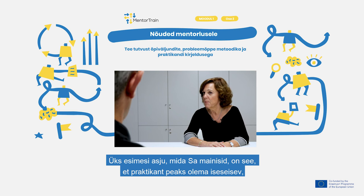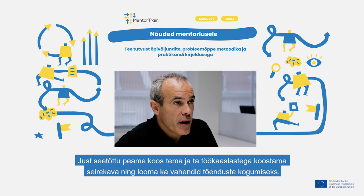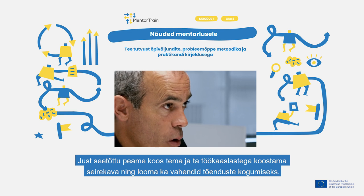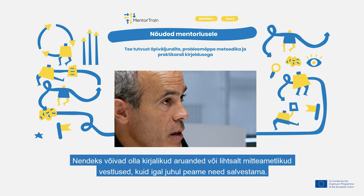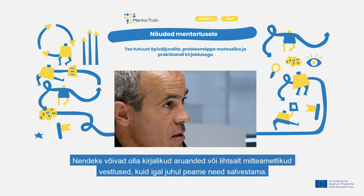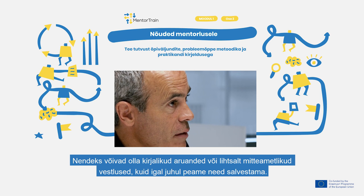One of the first things you mentioned is that the apprentice should be autonomous. But what if he does something wrong and nobody notices it? That's why we have to make a monitoring plan with him and with his workmates, and also create tools for evidence. They could be written reports or just informal conversations, but in any case we have to keep a record of them.